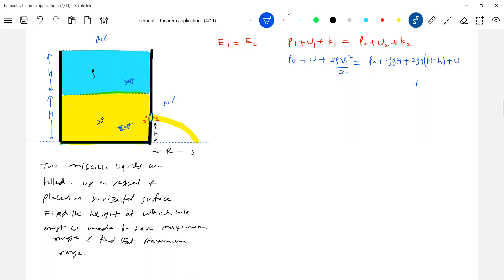Plus u - the liquid will be at rest. P0 gets cancelled, u also gets cancelled. So now rho V1 square: rho also will get eliminated. V1 square is equal to 2g(H minus small h), which gives 2g into (H - h).